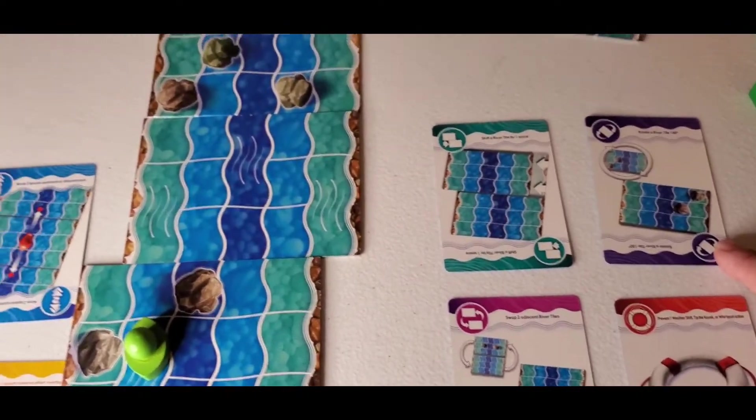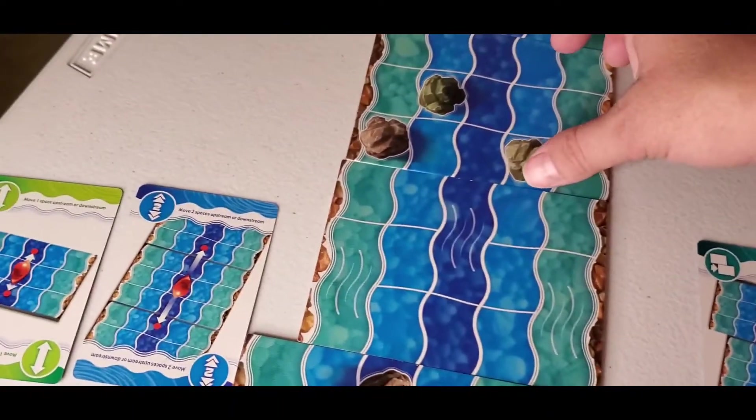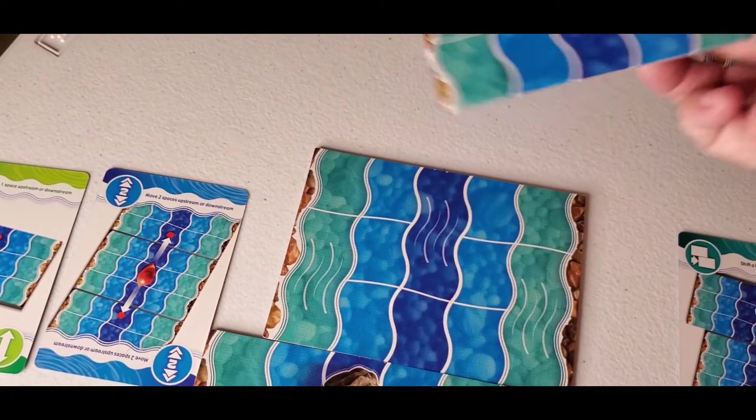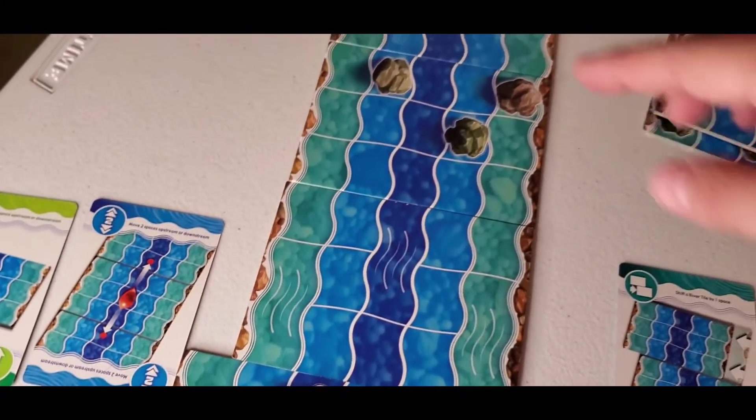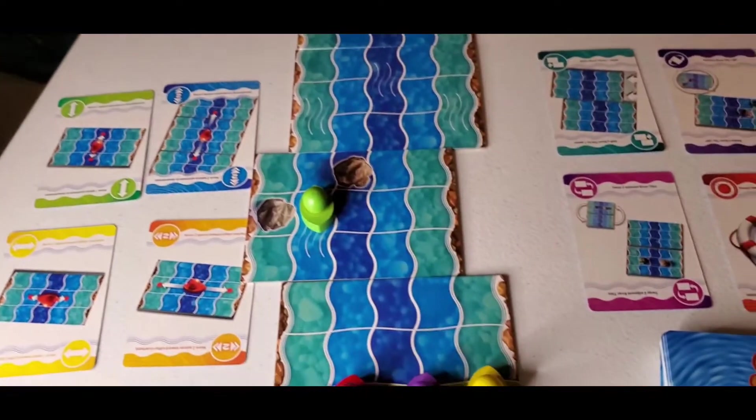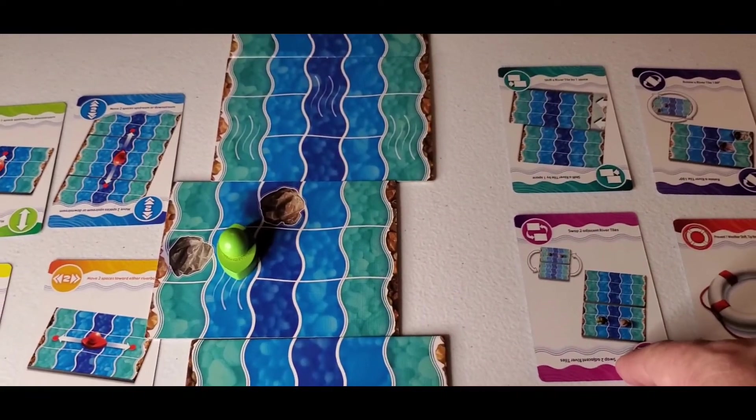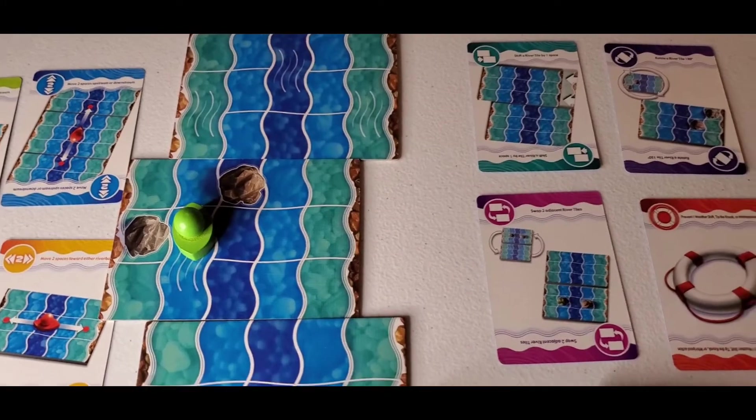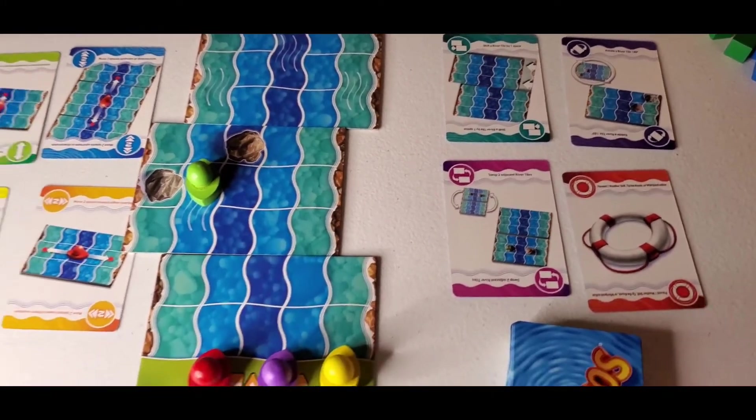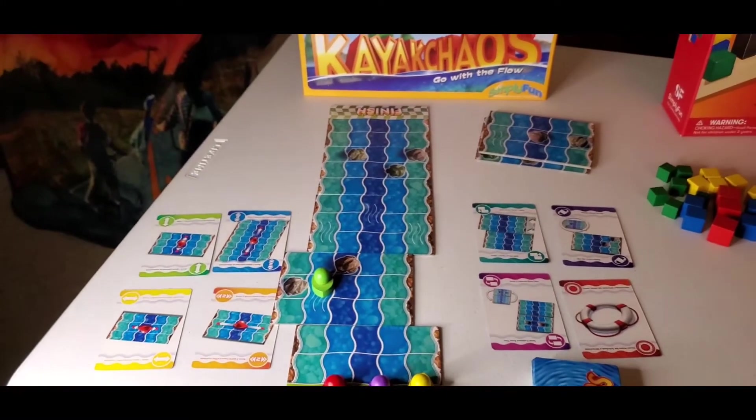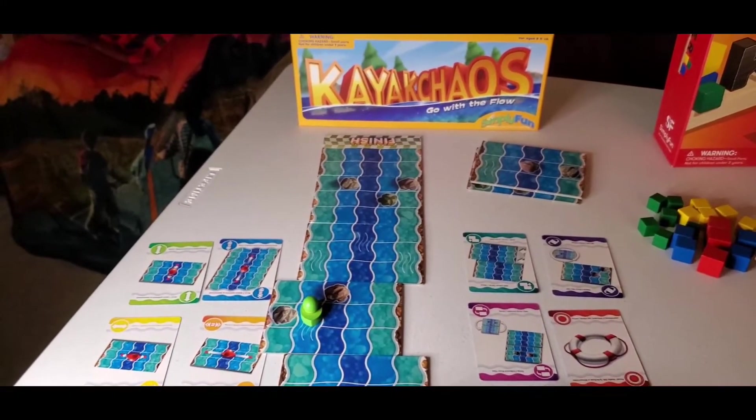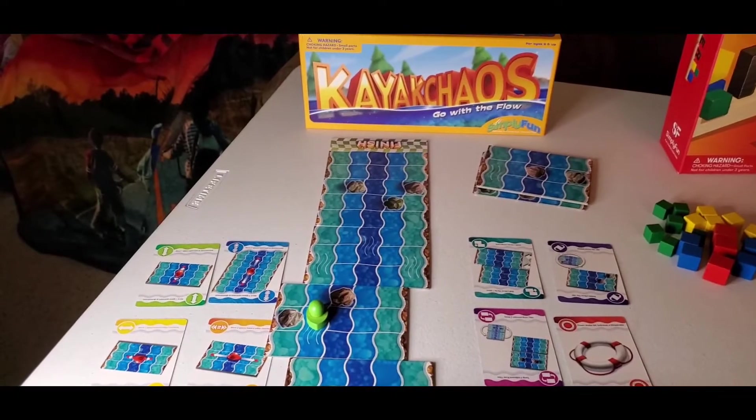We have the rotate a river tile. This one is awesome because here, I could rotate this one so that it clears my path and there's no rocks in my path. We have where you could swap two different tiles with each other, and a lifesaving tile which makes it so you can undo an action of one of the other players. So the first one to the finish line wins. And it was lots of fun.